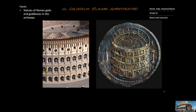In those Doric, Ionic, and Corinthian arches were statues. We know this because a coin from the Roman era shows the Colosseum with statues in the arches, and people have written about it. So it was quite decorated with Roman gods and goddesses.